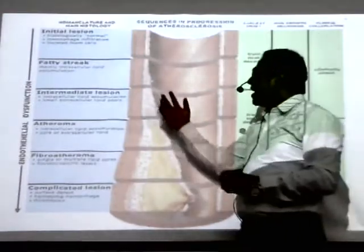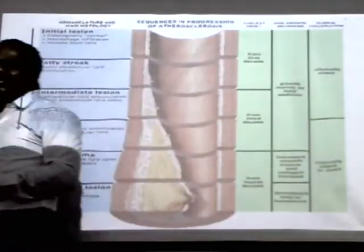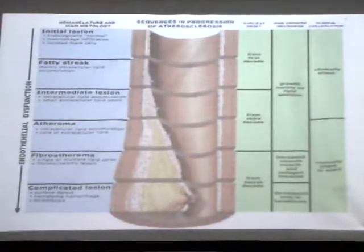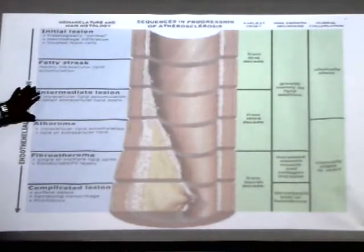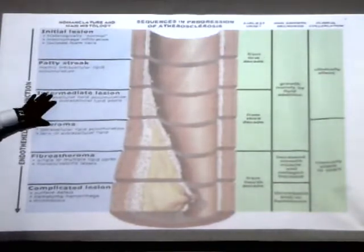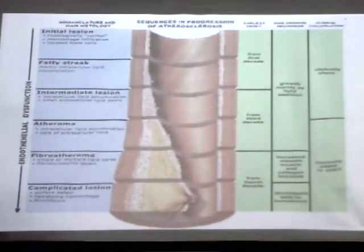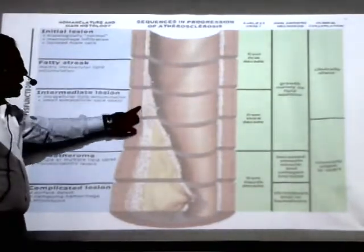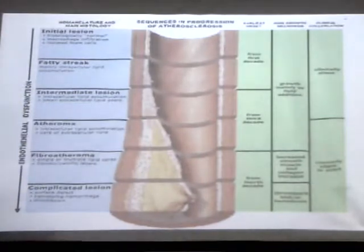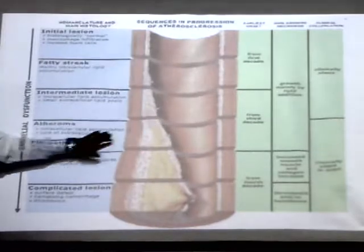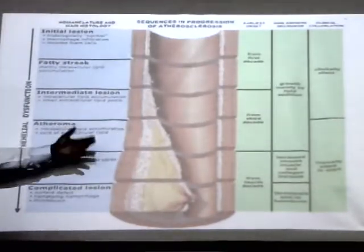Then comes the fatty streak — there is some deposition of lipid in the arteries, and this deposition of lipid is known as fatty streak, usually present in the first decade of life. Then comes the intermediate lesion at around the third decade or 30-plus years of age, where the intima layer starts to deposit more fat — intracellular lipid accumulation starts — and small extracellular lipid pools appear.